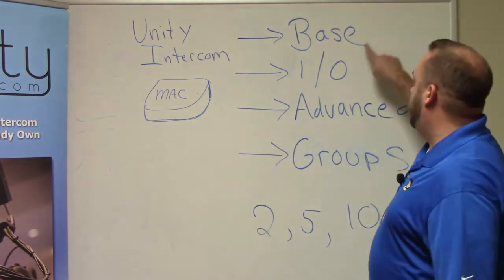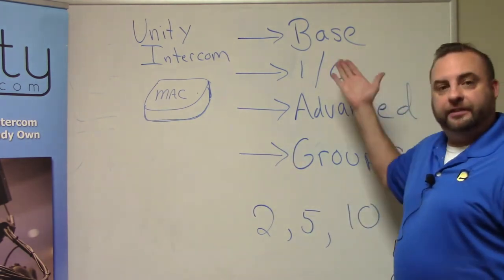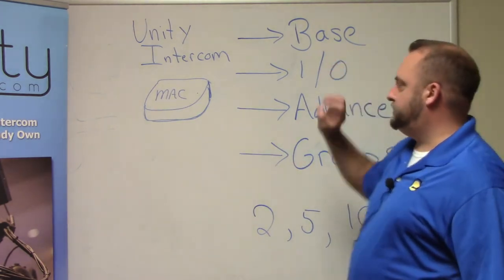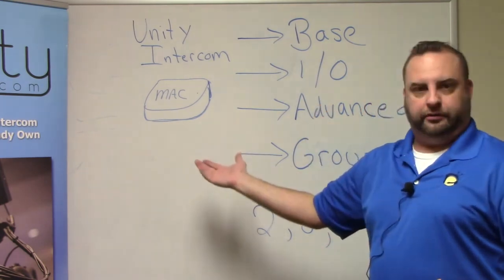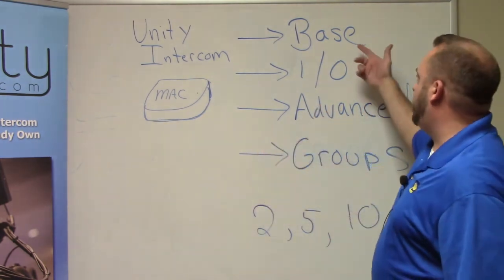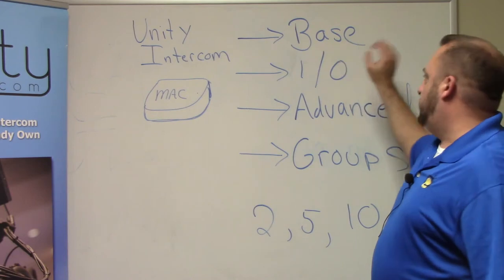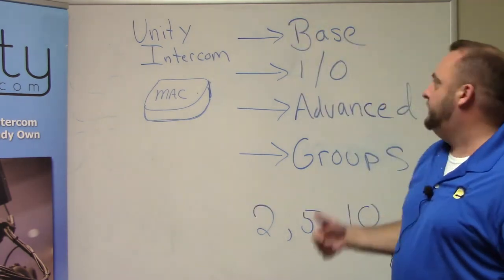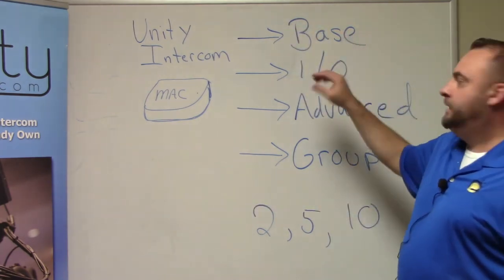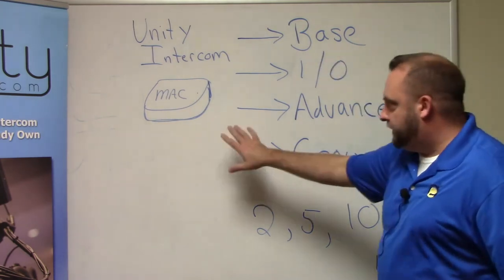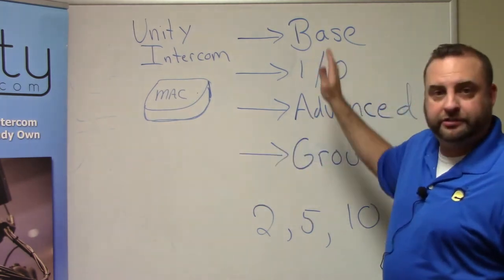Everyone has to buy a base license. The base license is essentially purchasing the Unity Intercom server. The base license happens to come with three users, but everyone has to buy it. It's 599 bucks. The base license is required and it's only a one-time purchase and then you own it forever.